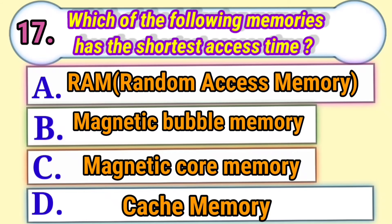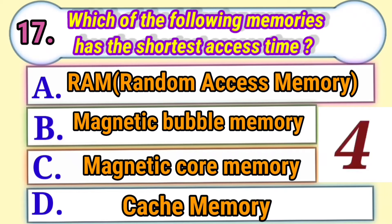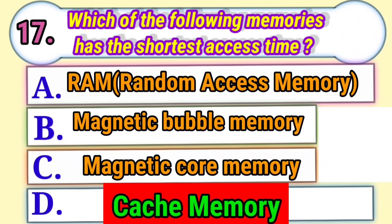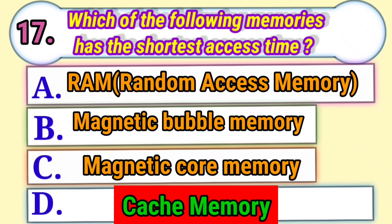Which of the following memories has the shortest access time? Answer: Cache Memory.